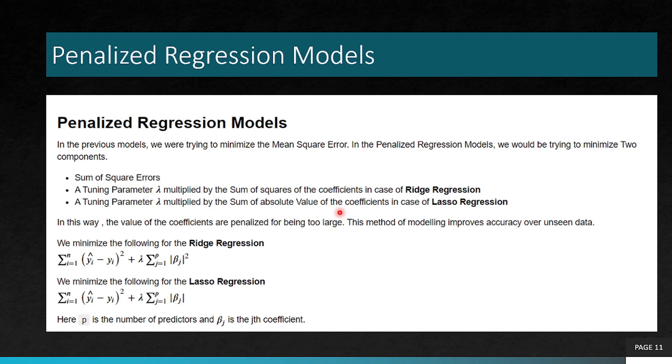And a tuning parameter lambda multiplied by the sum of absolute value of coefficients in case of lasso regression. In this way, the value of the coefficients are penalized for being too large. This method of modeling improves accuracy over unseen data.